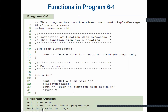Here is an example with a function named displayMessage. It contains a cout statement printing 'hello from the function displayMessage.' In the main function, we first print 'hello from main,' then call displayMessage which prints 'hello from the function displayMessage,' and then we print another cout: 'back in function main again.'